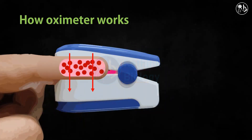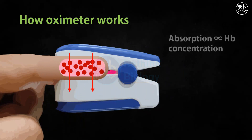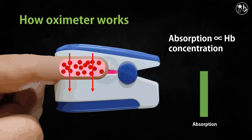The oximeter runs on the basic principle of absorption of light. When light passes through your finger, some of the light gets absorbed and the rest reaches the detector. This absorption of light is proportional to the concentration of hemoglobin in arterial blood, following the Beer-Lambert's law.